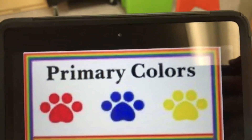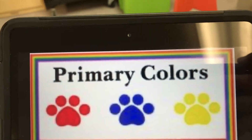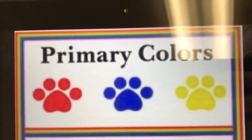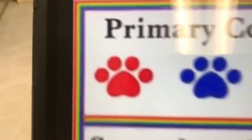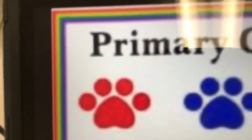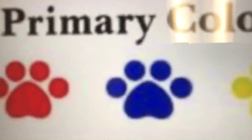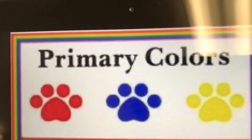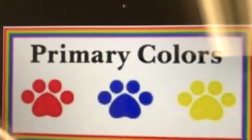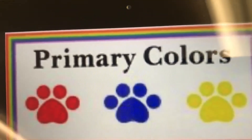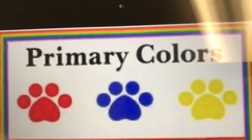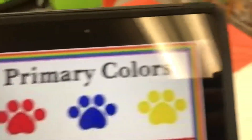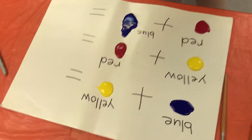Today's one-on-one lesson is talking about primary colors. There are three primary colors: we have red, we have blue, and we have yellow. What are those colors, friends? Red, blue, and yellow. And we're going to mix them to make different colors.